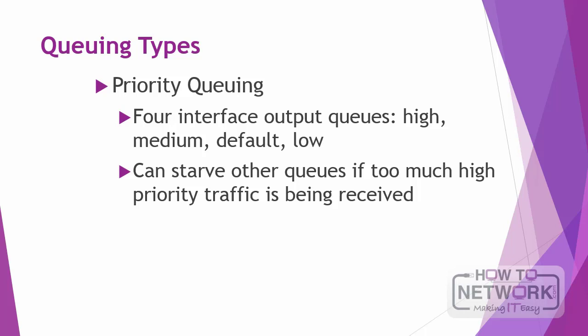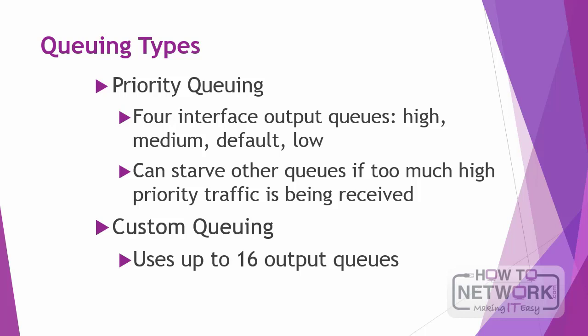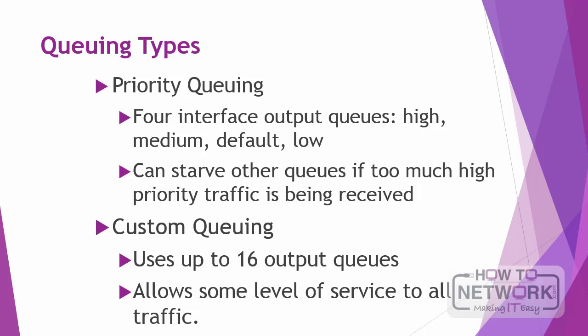Next is custom queuing, which uses up to 16 individual output queues. Byte-size limits are assigned to each queue so that when the limit is reached, it proceeds to the next queue. The network operator can customize these limits. Custom queuing is fairer than priority queuing because it allows some level of service to all traffic, but it is really a legacy solution as there are improvements in queuing methods.